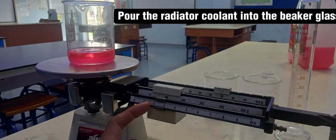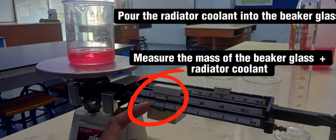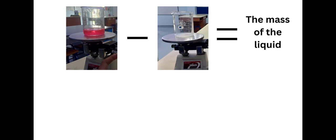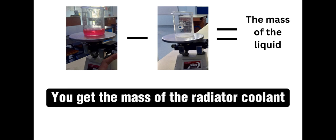Pour the radiator coolant into the beaker glass. Measure the mass of the beaker glass plus radiator coolant. This gives you the mass of the radiator coolant.